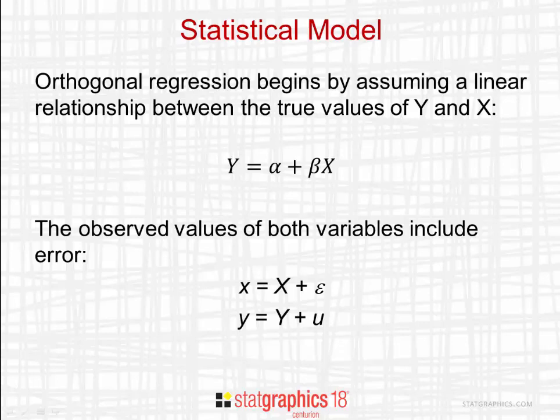The observed values of both variables, however, include error. Lowercase x, which is the observed value of X, is assumed to be equal to the true value of X plus an error, epsilon. The observed value of y is the true value of Y plus an error, u.